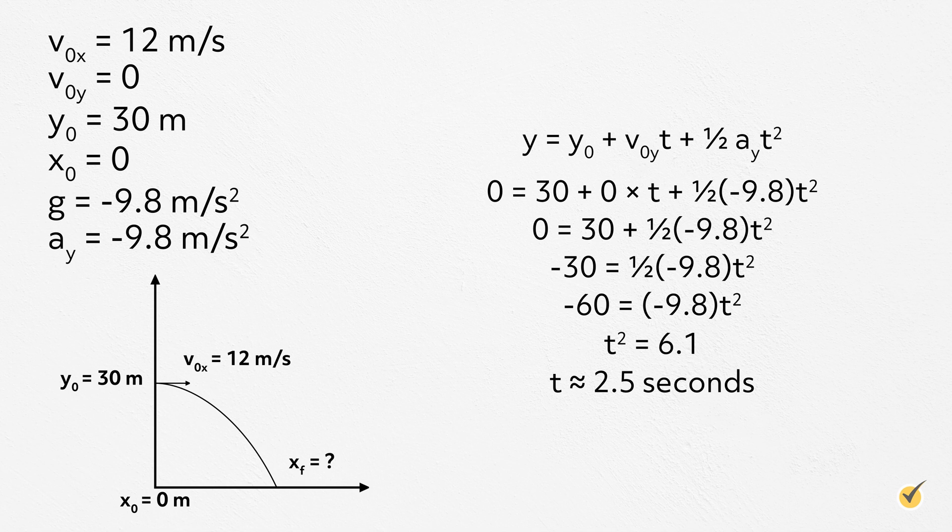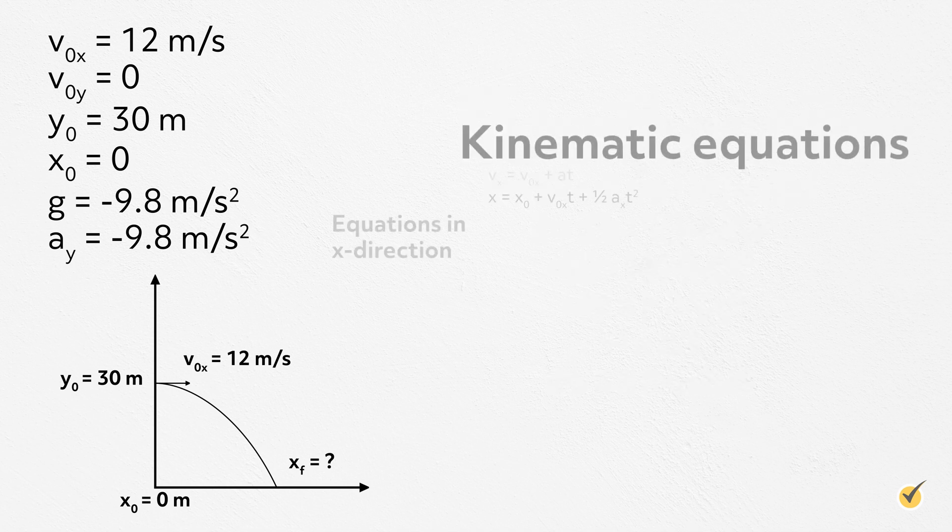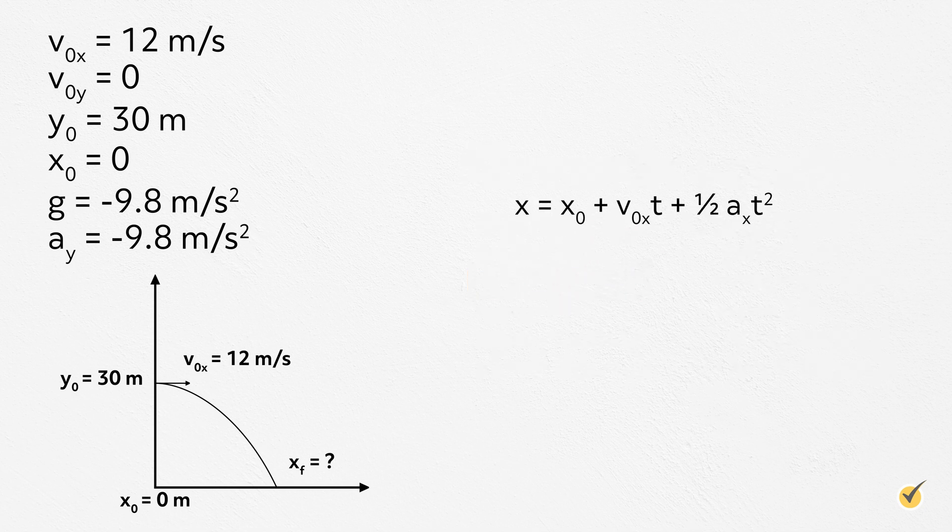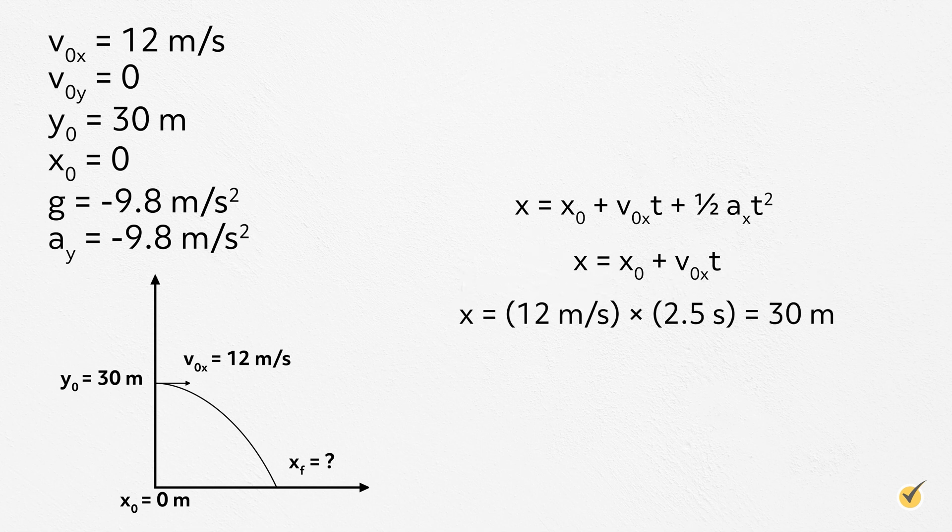Now, we can find how far away the ball lands. Looking back at our equations, it makes sense to use the same equations, but for the x components this time. Remember, there is no acceleration in the x direction, so that is 0, eliminating the last term. But, we said x0 equals 0 as well. So, plugging in what we know, we get x equals 12 meters per second times 2.5 seconds equals 30 meters. The ball lands about 30 meters away from the cliff.